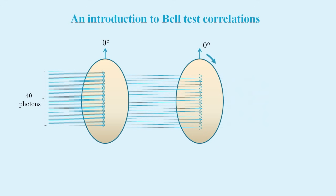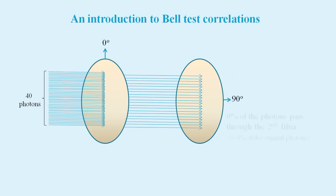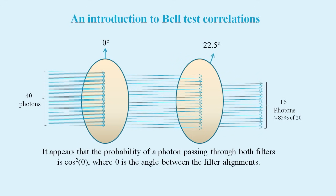Now, if we turn the second filter, so it's at an angle of 45 degrees from vertical, we find that only half the photons that reach it get through. At 90 degrees, none of the photons get through. But things get a lot less linear when we consider an angle like 22.5 degrees. At this angle, 85% of the photons that reach the second filter pass through. It appears that the probability of a photon passing through the second filter is given by the cosine squared of the angle between the two filter alignments.